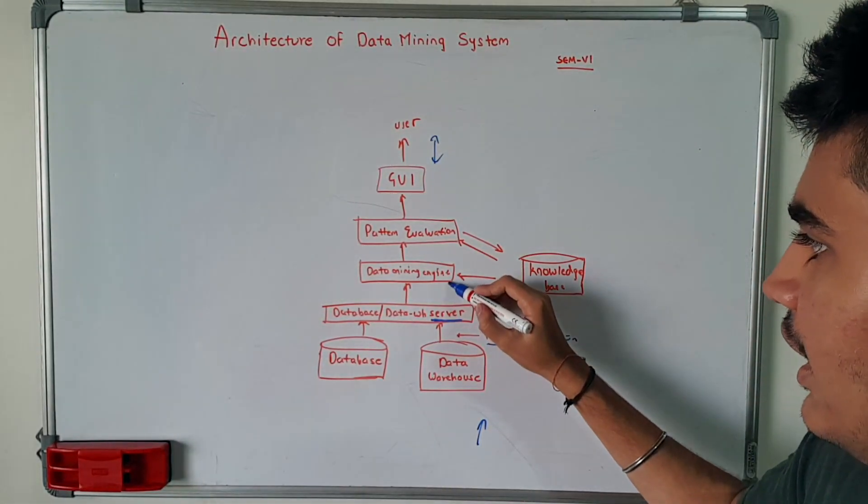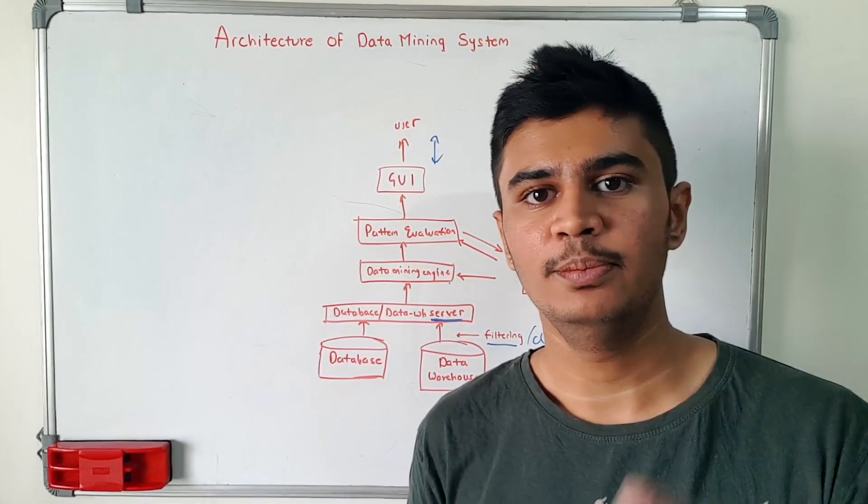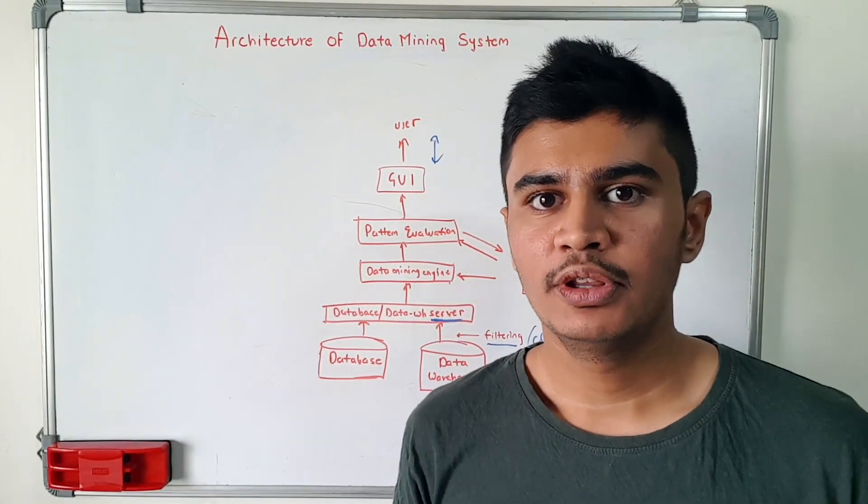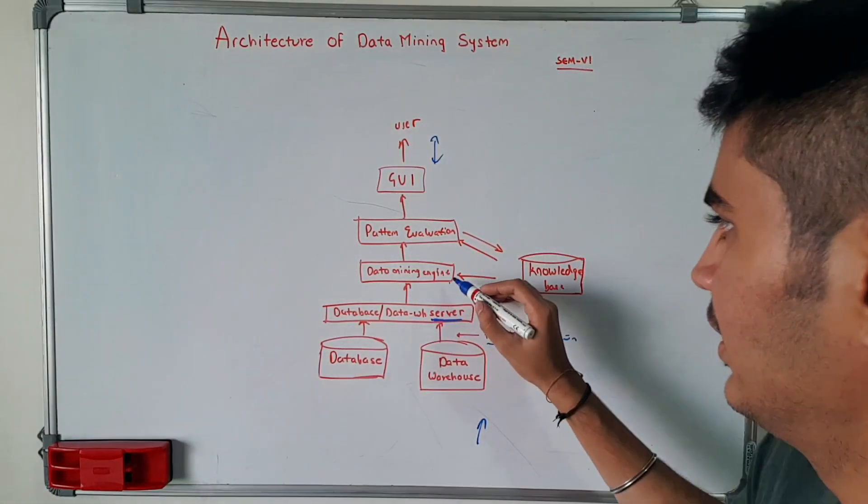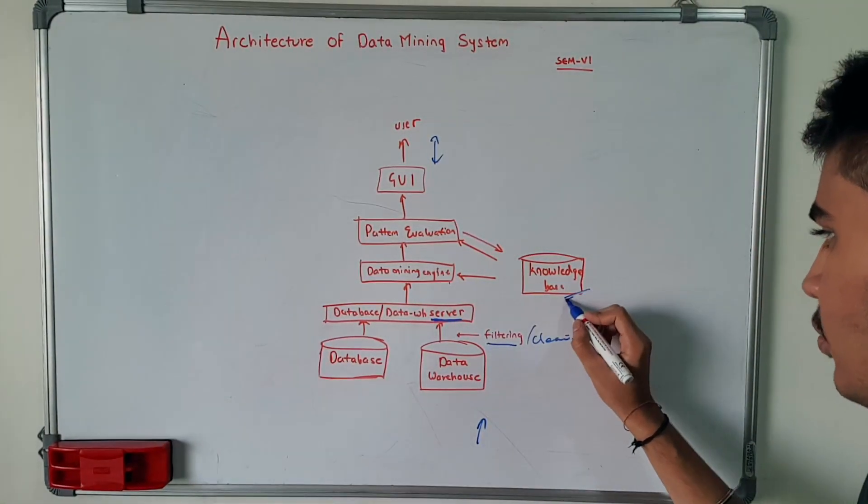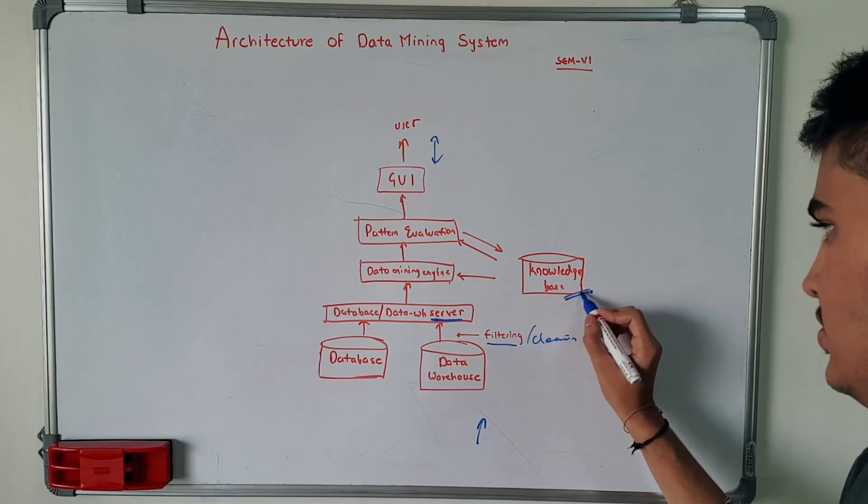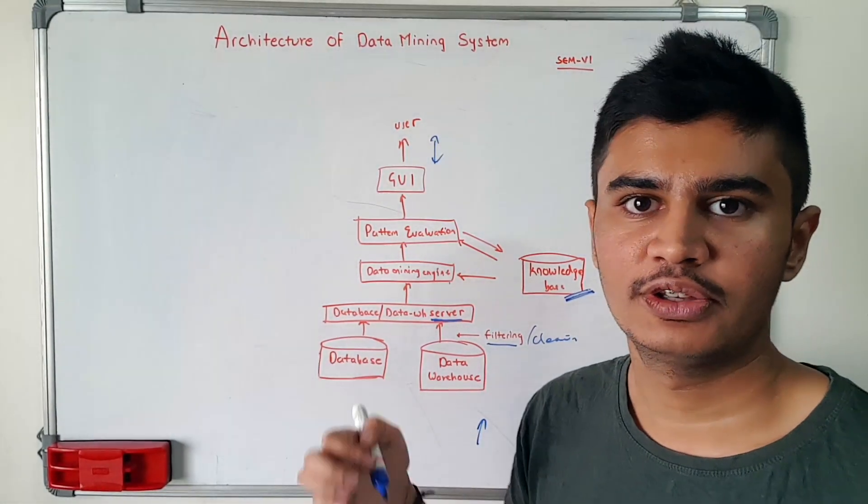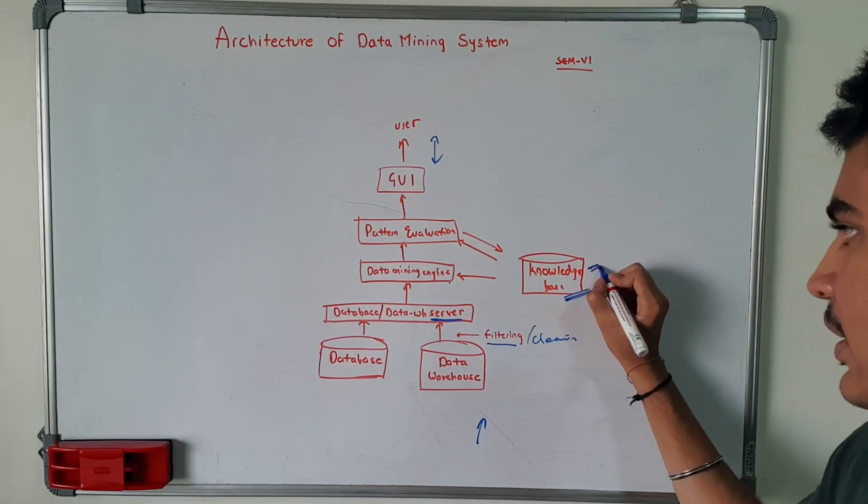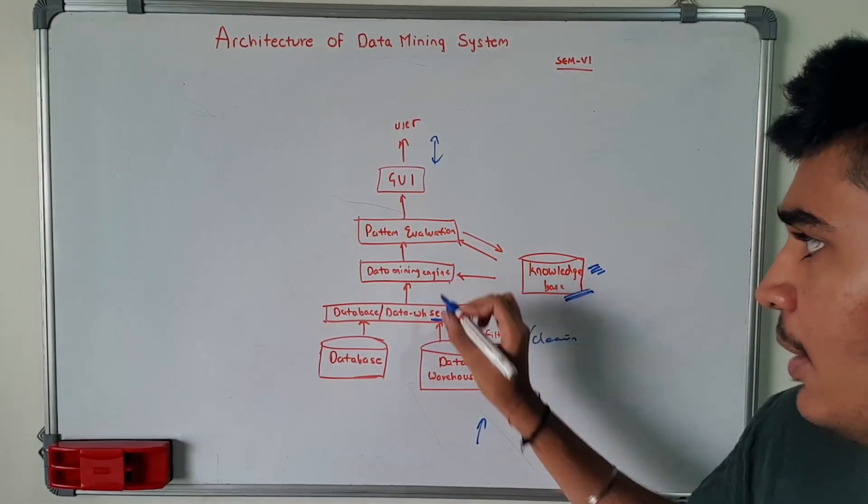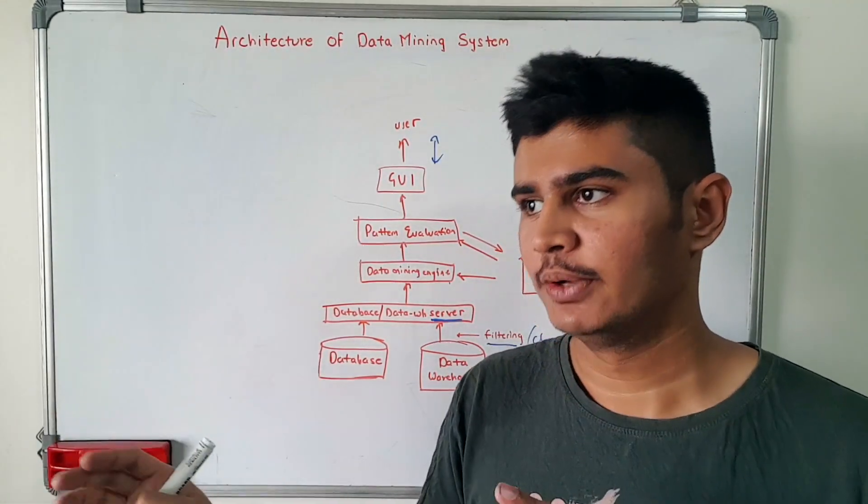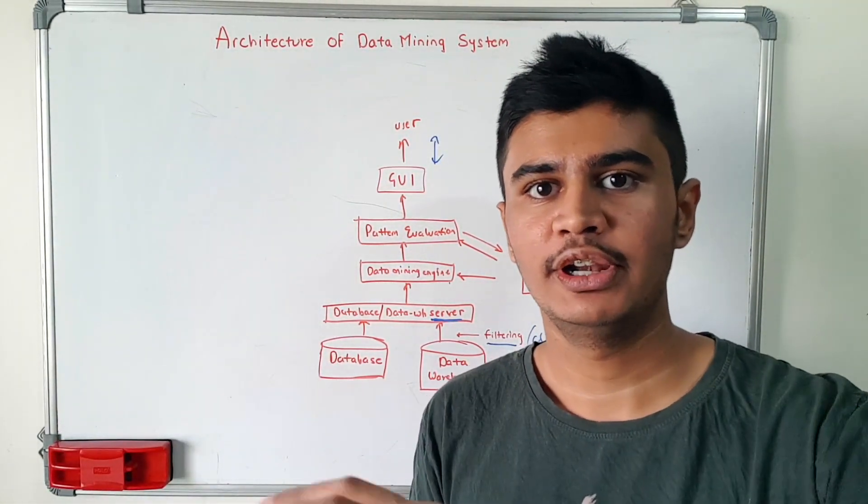Next is the data mining engine. It will run basic, depending upon the data which you want, it will run the particular algorithm. The data mining engine works with the help of knowledge base. Knowledge base is basically helpful for searching the data and it can reveal patterns in our data, like the particular patterns which you want. So with the help of data mining algorithm which will give us the particular data which we want.